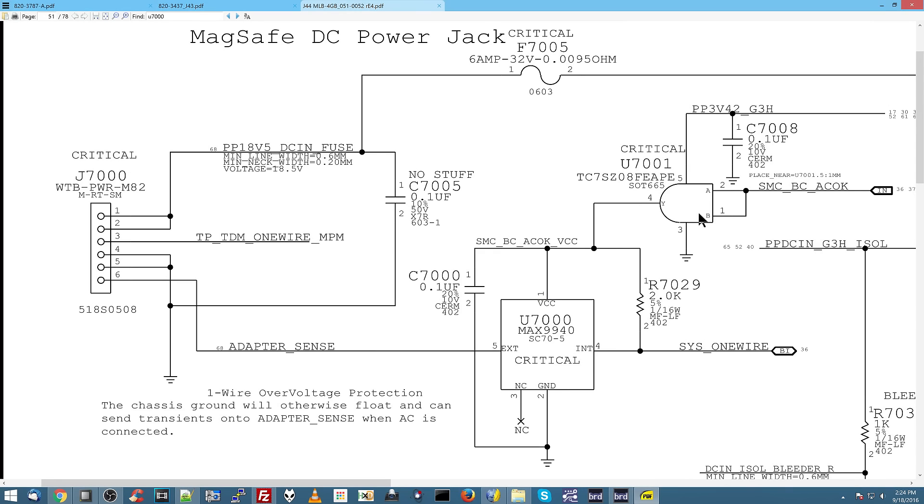So, what's going to bring power to pin 1 of this chip? This thingy over here. And how does this work? This is a logic gate. When you have A and B, you get Y. So, when PP3V42 is present, because PP3V42 is the power line that turns this on, then this will be on. And when this is on and it sees A and B are present, so SMCBCACOK is present, it will shoot out 3.42 volts at Y, which will then power this chip.